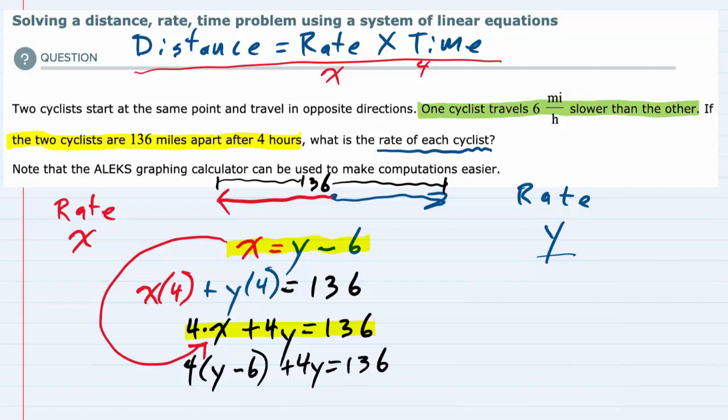So we can now start to solve this for y by first distributing that 4. And 4 times y is 4y. 4 times minus 6 is minus 24. Bring down this second 4y that's already in the equation, equals 136. And now combining like terms, we have a 4y and a 4y.